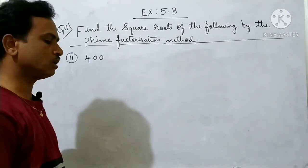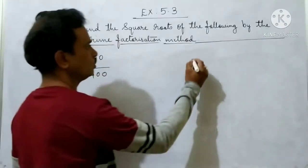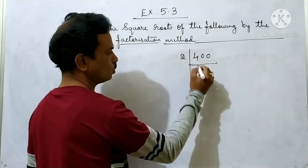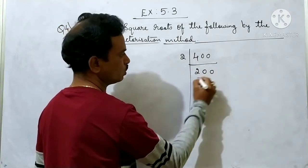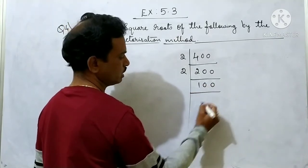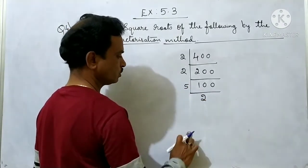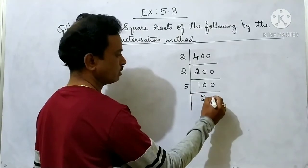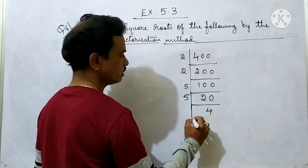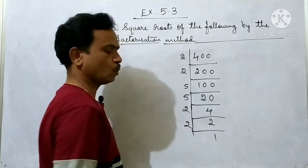Second question: find the square root of 400. Take 400 and divide by 2: 2 twos are 4, bringing down 00; then 2 into 200 — 2 twos are 4, 2 ones are 2, carry; keep as it is. Next we take 5: 2 twos are 10, then 5 fours are 20. Again divide: 2 twos are 4; then 2 ones are 2, giving 2 again.